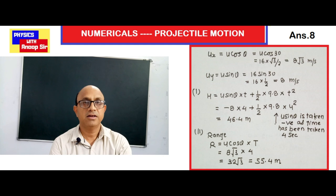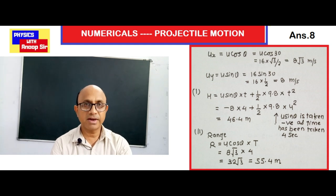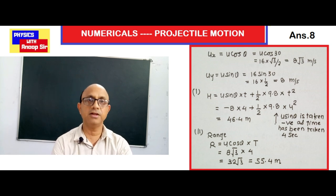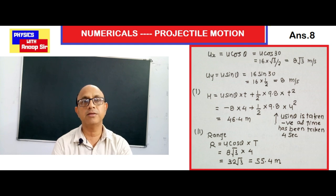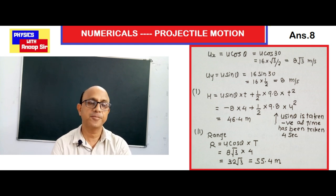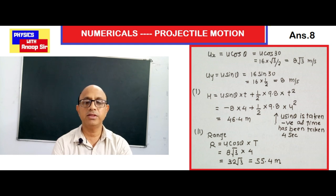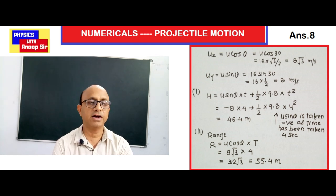The horizontal component of velocity: u cosθ = u cos30° = 16 × (√3/2) = 8√3 meter per second. The vertical component: u_y = u sinθ = 16 × sin30° = 16 × (1/2) = 8 meter per second. Both components are now determined.